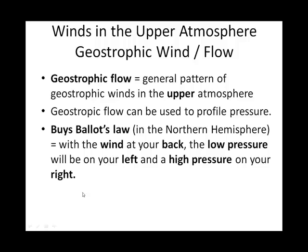Something called Buys-Ballot's Law has to do with the Coriolis force deflecting wind to the right in the northern hemisphere. Here's a useful trick to remember: if you turn your back to the wind and put out your left hand — notice the L's match up — you will be pointing toward the low pressure. That works in the northern hemisphere and relates to the Coriolis force and deflection. If you then hold out your right hand, that side will be your high pressure.